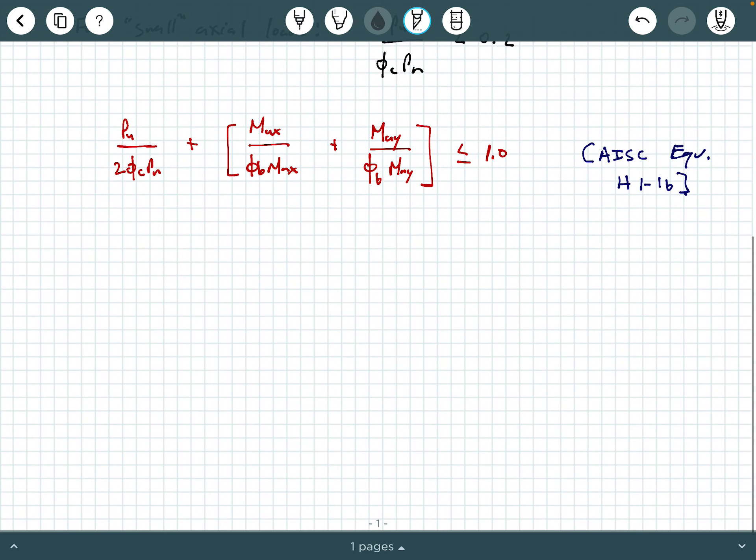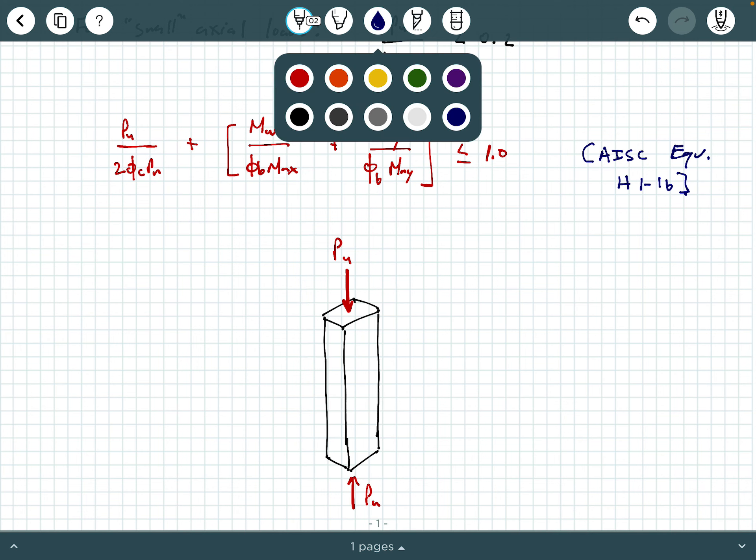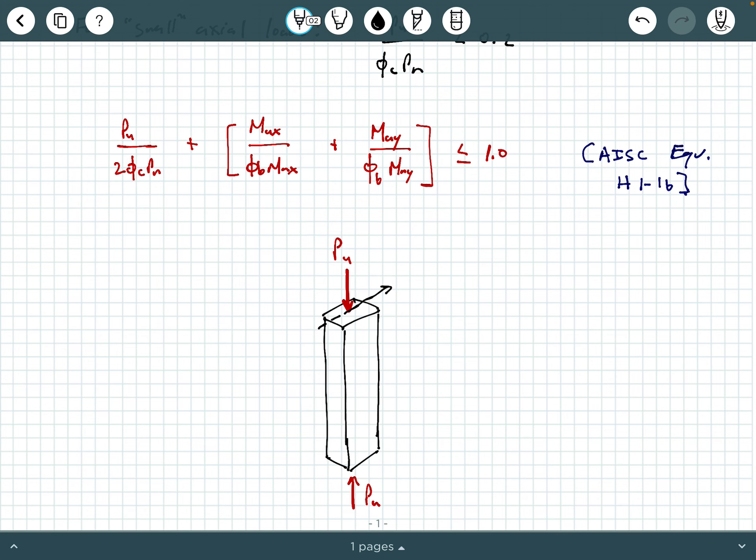So the way you can kind of visualize this, I'm going to just go ahead and sketch an example of a column here. I know this is a rectangular column, but you're probably more likely to see a W shape of some sort. But let's say we have a rectangular column. We'll have a PU here. That's our axial force. And it's on the bottom surface too to be in equilibrium.